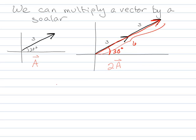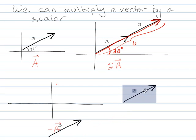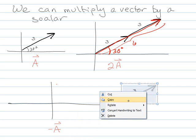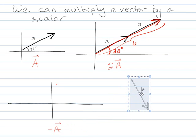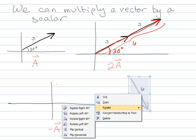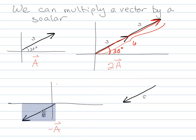We can also multiply a vector by a negative number. So again use the same one. If instead of having A, if I wanted to have negative A, basically I'm just going to take A, and I'm going to rotate it 180 degrees. This will be now negative A, which is basically the same vector. It's just going the opposite direction.